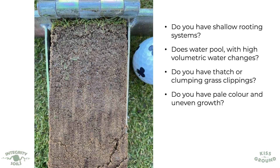So dig a hole and take a look. Do you have shallow rooting systems? Have you got thatch development — that's the undecomposed plant material, roots, litter, grass clippings building up? How does water move through your environment? Do you see it ponding or pooling up in certain areas, or do you see big changes in volumetric water?